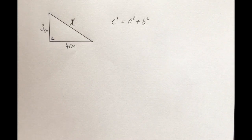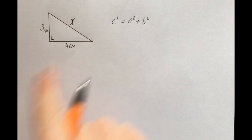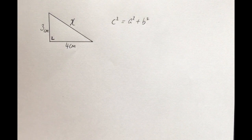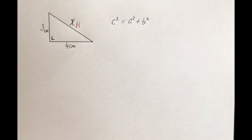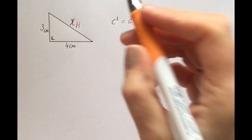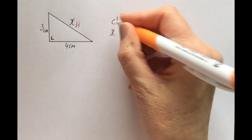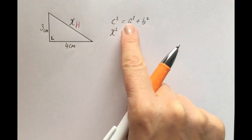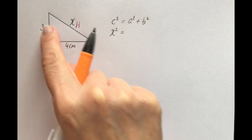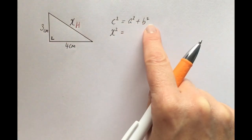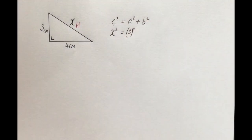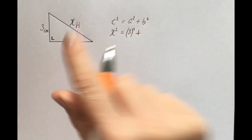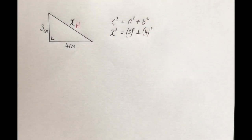c has got to represent the hypotenuse. When we look at this triangle, the first thing you want to identify is which one is the hypotenuse — and it is x, that is the hypotenuse. So we're going to put x in for c. Instead of c squared, it will be x squared equals. Then it's the other two sides squared and added together. Order doesn't matter since we're squaring each and adding them, so I'm going to do the 3 first — and remember, when you sub something in, keep brackets around it — plus the 4.